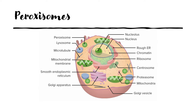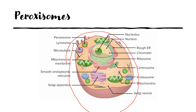All metabolic processes in the body are carried out by cells, and the cells contain various organelles which help carry out the functions of these cells. One of these organelles is the peroxisome that you see here. These are small round membrane-bound organelles that help in the detoxification process.